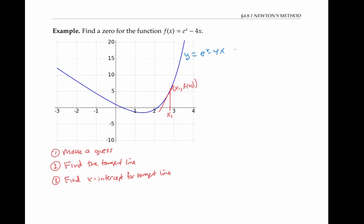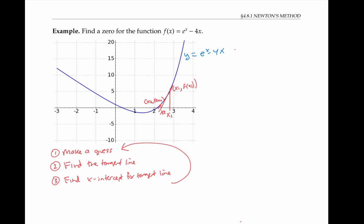I'll call this x-intercept x₂. Now I'm just going to repeat this process. I'll use x₂ as my next guess. I'll follow it up to the function where I have the point (x₂, f(x₂)). And then I'll draw a new tangent line and get a new intercept. I can repeat this process as often as I need to, to get a sufficiently accurate approximation to my actual zero of my function.